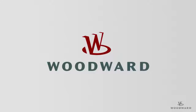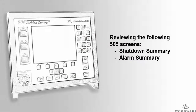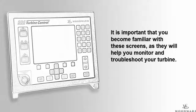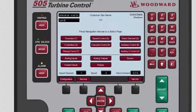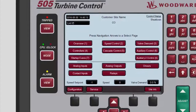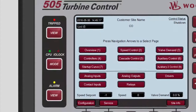Hello and welcome to the 505 tutorial for trip and alarm latch and logs. In this tutorial we will review the 505 shutdown summary and alarm summary screens. These screens provide you with a log of alarms and shutdowns to help you monitor and troubleshoot your turbine. The buttons for accessing the trip or shutdown summary screen and the alarm summary screen are located to the left of the LCD display on the 505.